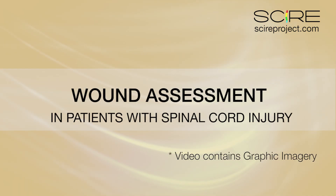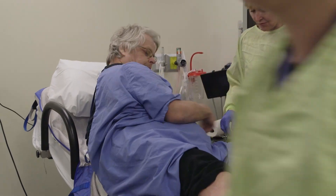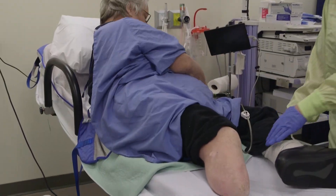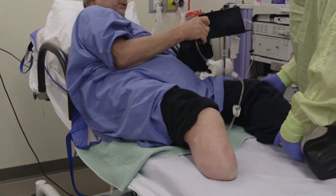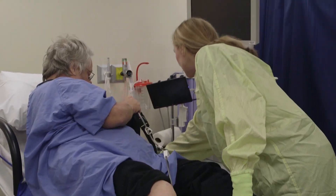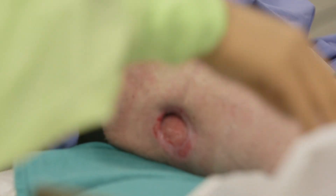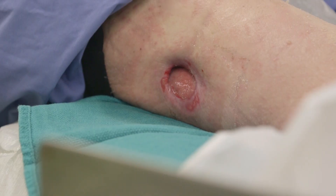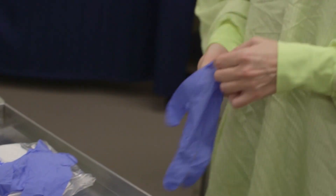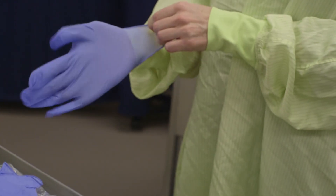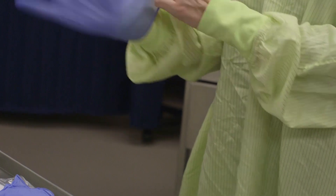Wounds and pressure ulcers are frequently seen in people with spinal cord injury. The reduced activity and prolonged bed rest that accompany spinal cord injury can significantly affect health and quality of life, and can lead to the development of pressure ulcers. When left untreated or poorly managed, serious health complications can occur.